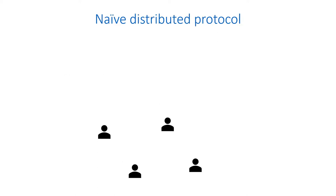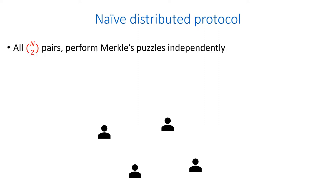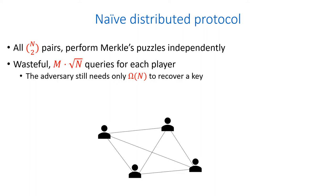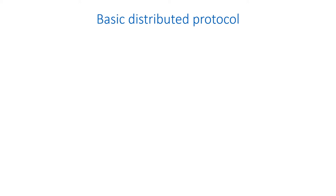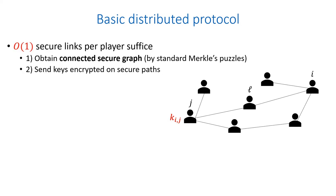A naive implementation of such a distributed protocol would be that all pairs of players perform the standard Merkle's puzzles independently and agree between them on secret keys. This protocol is wasteful because each player makes m times square root of n queries to the random oracle, where the adversary still needs only omega of n queries to recover a key. We can improve upon the naive protocol by having each player create a constant number of secure links in a way that creates a connected graph. We call such a graph a connected secure graph.